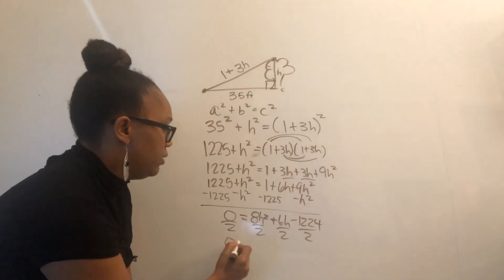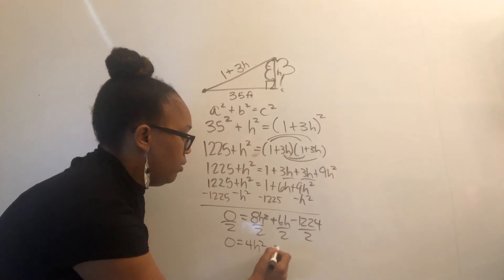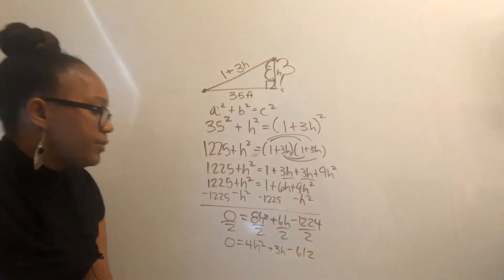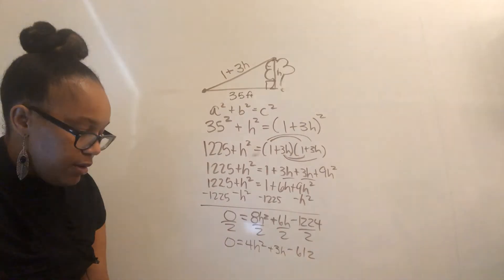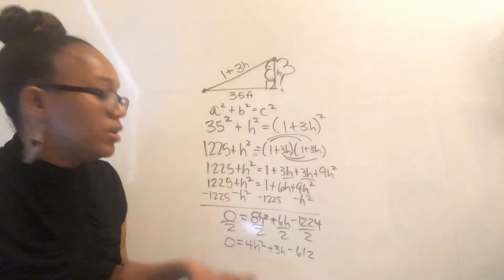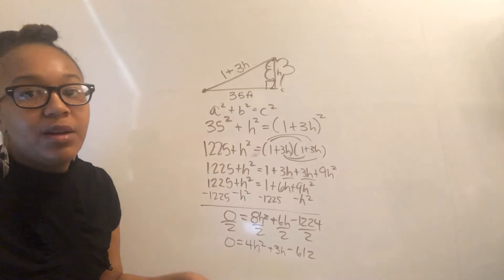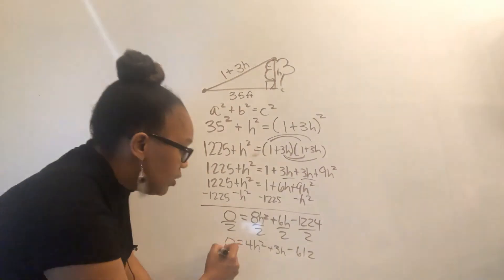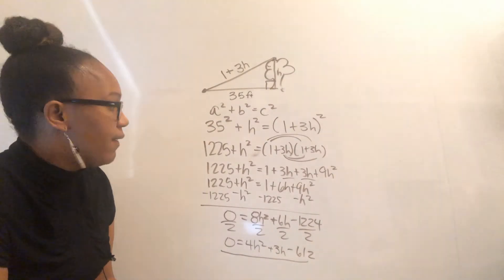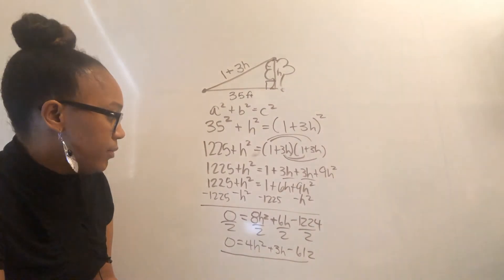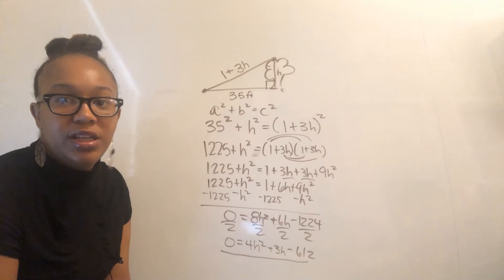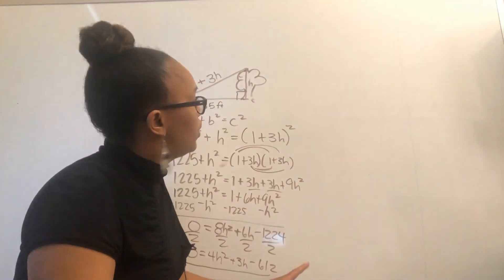After dividing by two, we get zero equals four H squared plus three H minus 612. We could try factoring, but the numbers are large, so the quadratic formula is easiest. We'll use the quadratic formula.